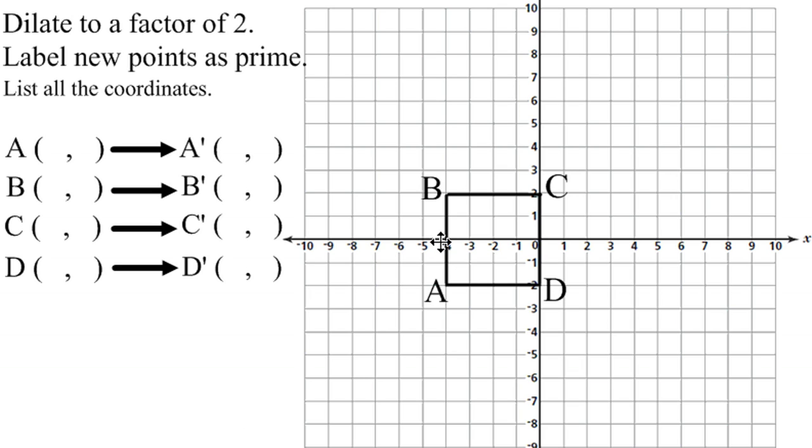A is at 4 to the left and 2 down: negative 4, negative 2. B is 4 to the left and 2 up, so 4 to the left is negative 4, and 2 up is positive 2.